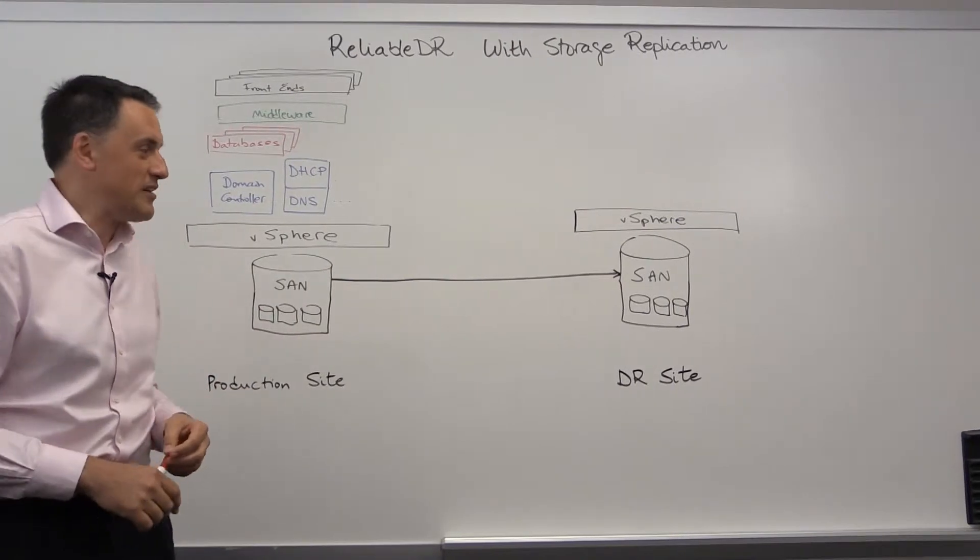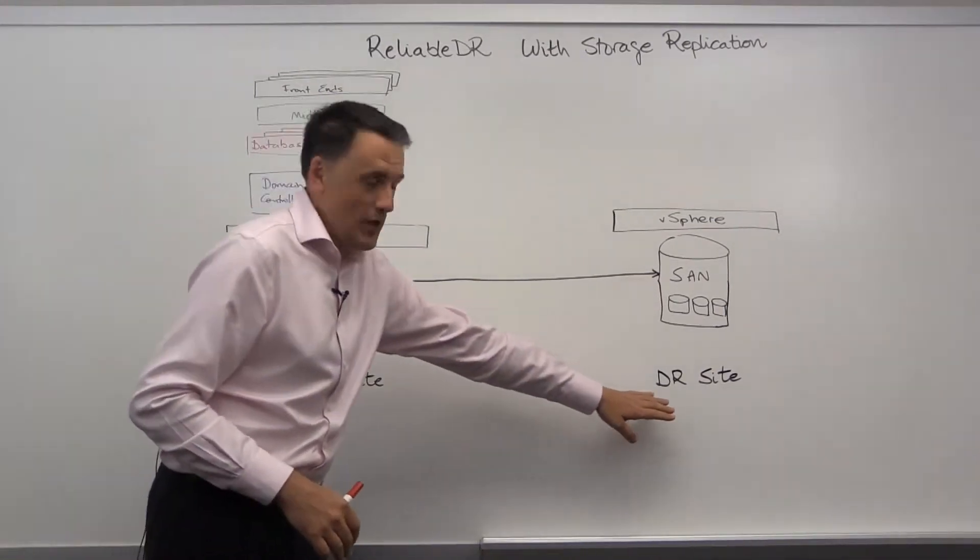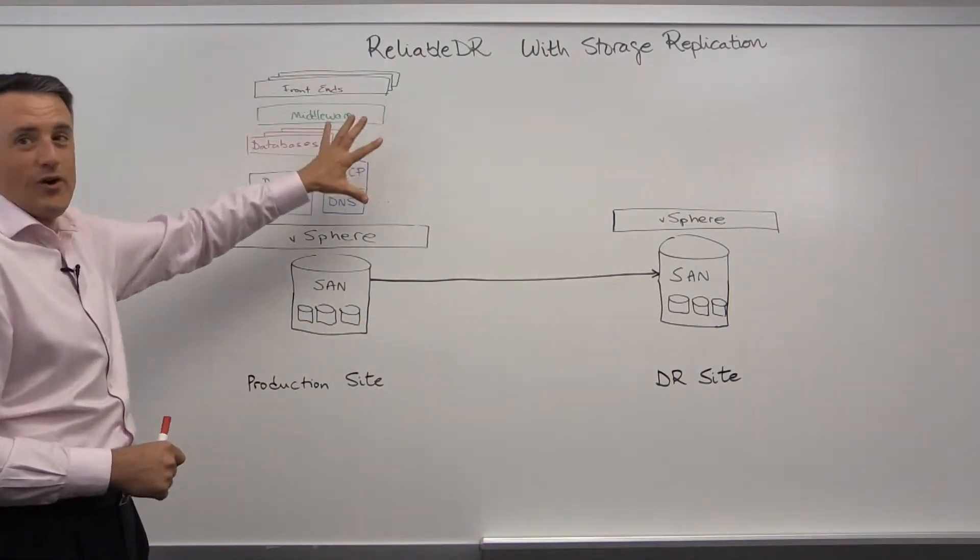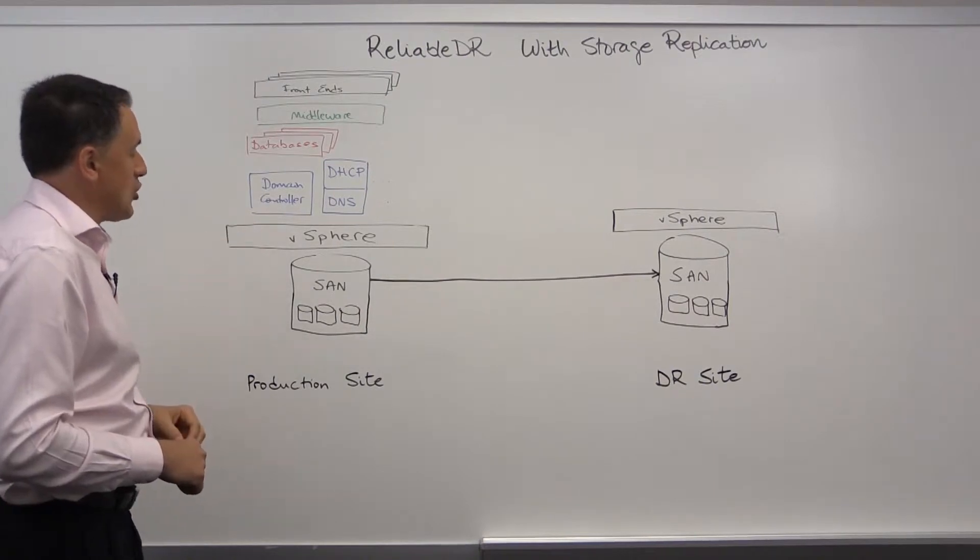In the whiteboard, we have a production site here on the left, we have a DR site on the right side, and we have here a collection of VMs that are running in production, virtualized on vSphere.